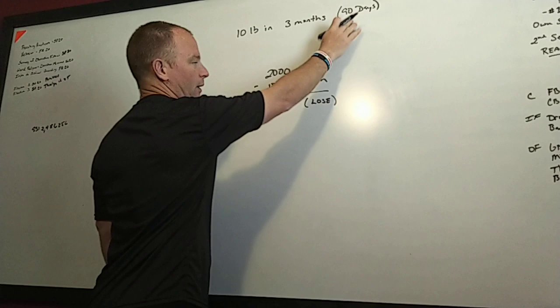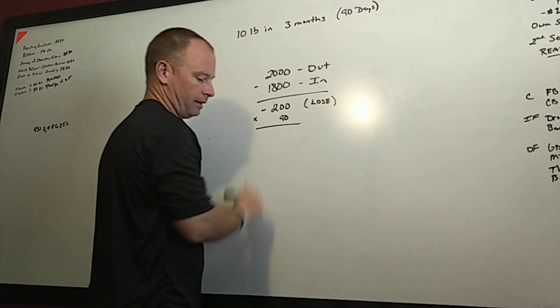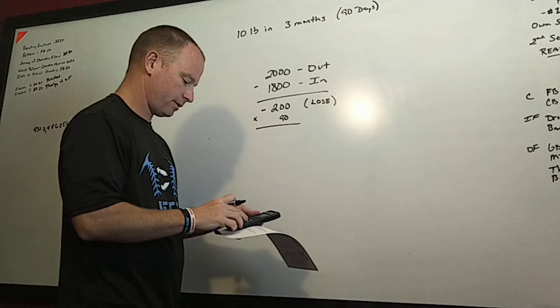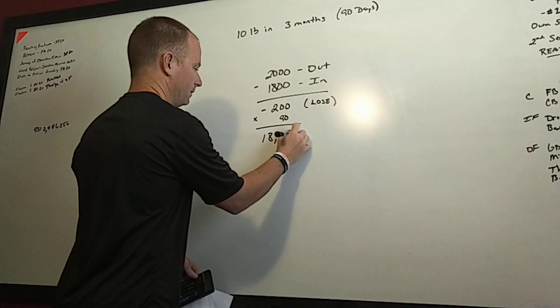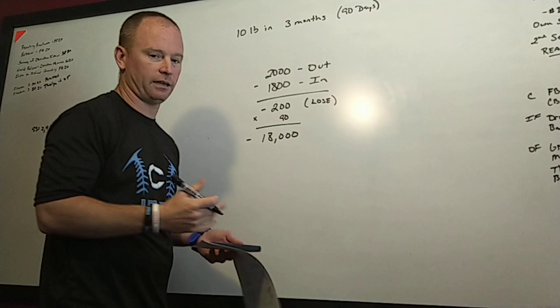Anytime we have a deficit we're going to lose weight, and anytime we have excess we're going to gain weight. After three months will he meet his goal? We've got to do a little math. Three months is 90 days, so we take the 200 and multiply it by 90. 200 calorie deficit per day multiplied by 90 days gives us 18,000 calories.